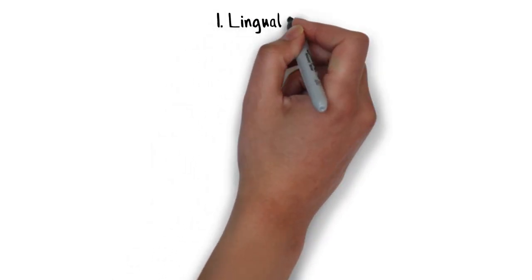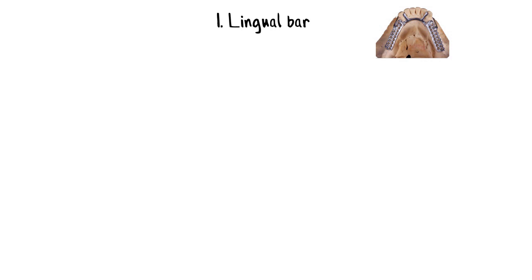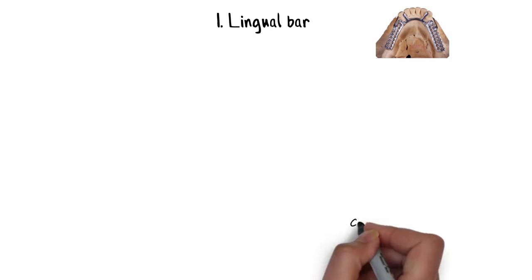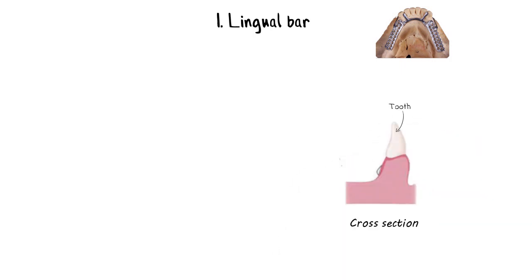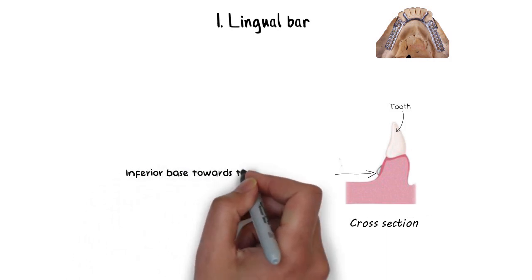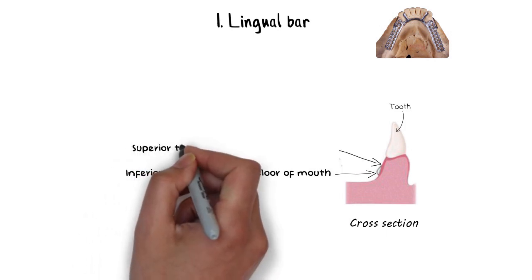The lingual bar is perhaps the most commonly used major connector, mainly because of the simplicity in its design. When viewed in cross-section, it has a typical half-pear shaped design, with the base located just above the moving tissues of the floor of the mouth, while the tip is located towards the gingival margin.